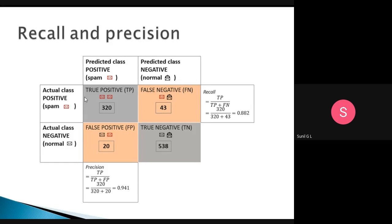Let's take an example of classifying emails as spam or normal. Spam is positive; not spam (normal) is negative. From our confusion matrix: True Positive (correctly predicted as spam) = 320 emails; False Negative = 43; False Positive = 20; True Negative = 538. This is the confusion matrix based on the classification of email data.